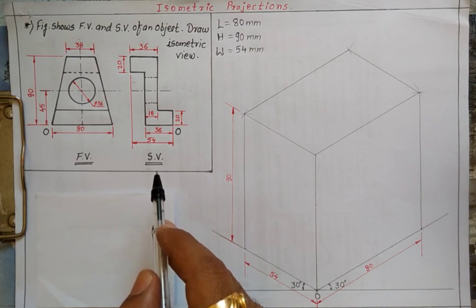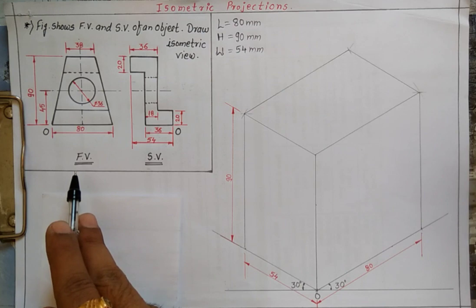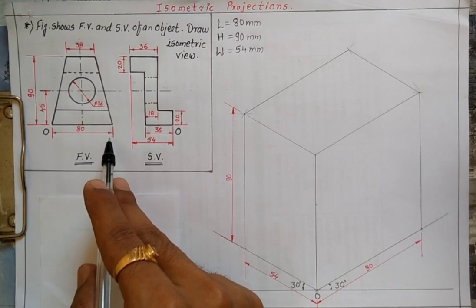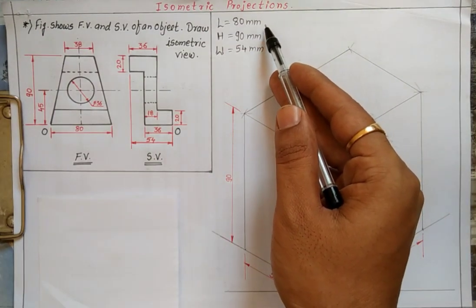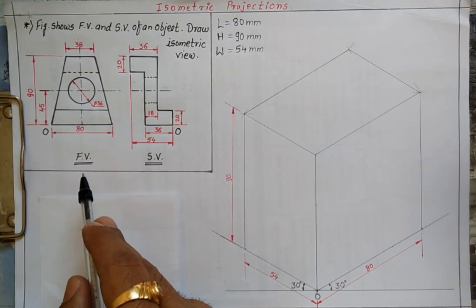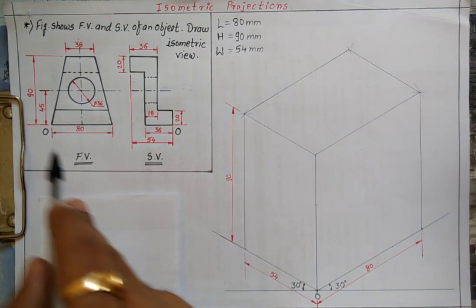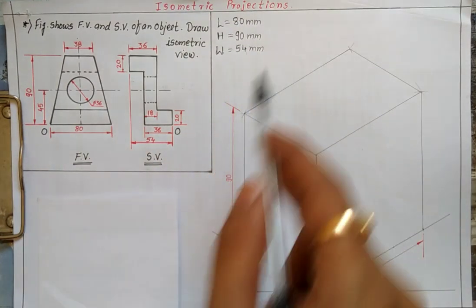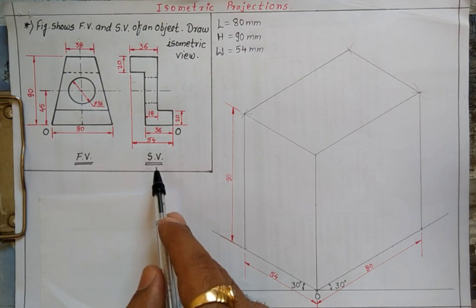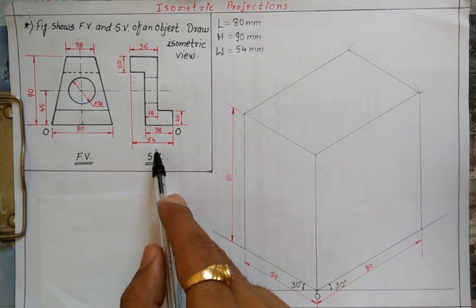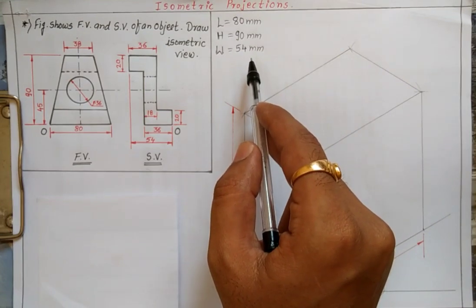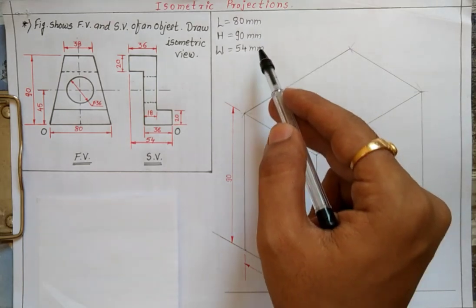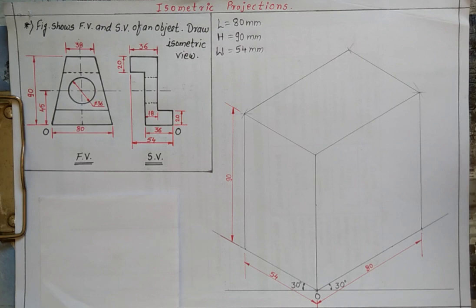We initially note the overall length, width, and height of the object. From the front view we get the length of the object, which measures 80 mm. From the same front view we get the height of the object, which is 90 mm. From the left-hand side view we get the width of the object, which measures 54 mm. These are the overall dimensions of the object.